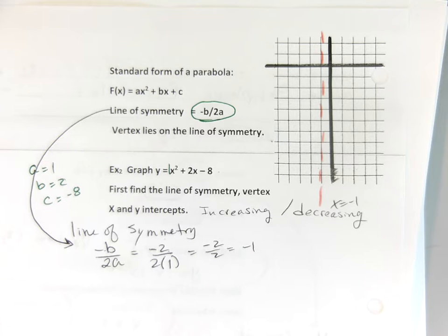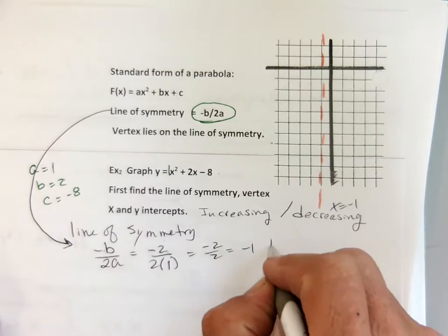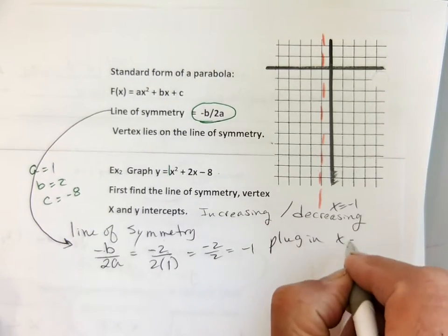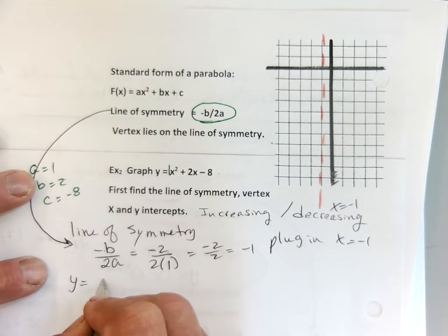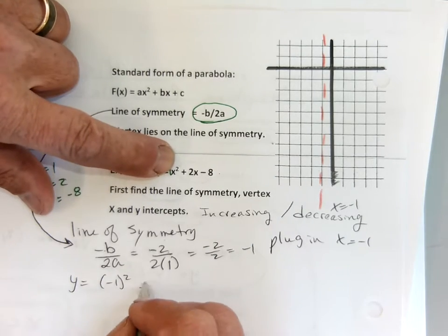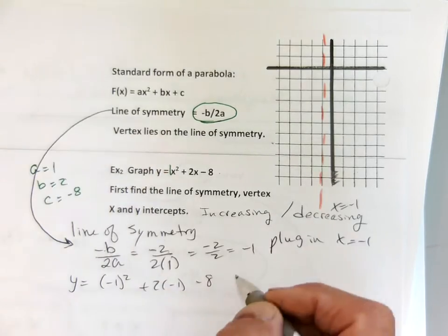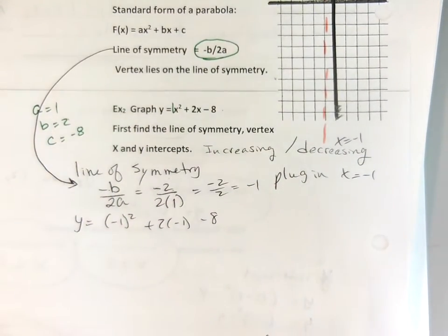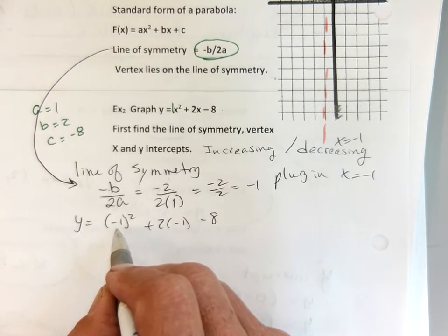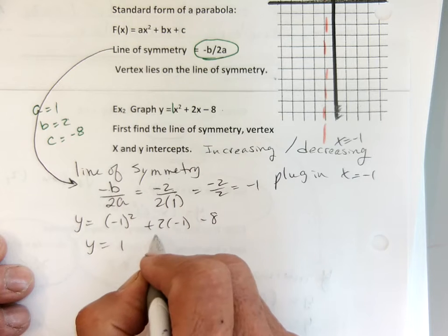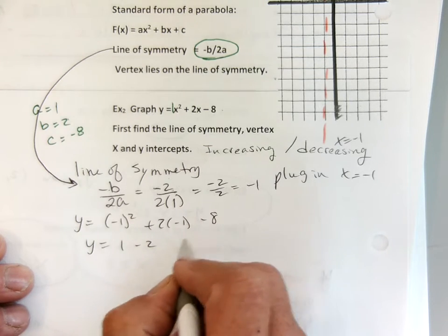If we take our negative 1 and plug it in, we'll get its y value. We're going to plug in x equals negative 1. So y equals negative 1 squared plus 2 times negative 1 minus 8. Negative 1 squared is positive 1, and 2 times negative 1 is negative 2 minus 8.